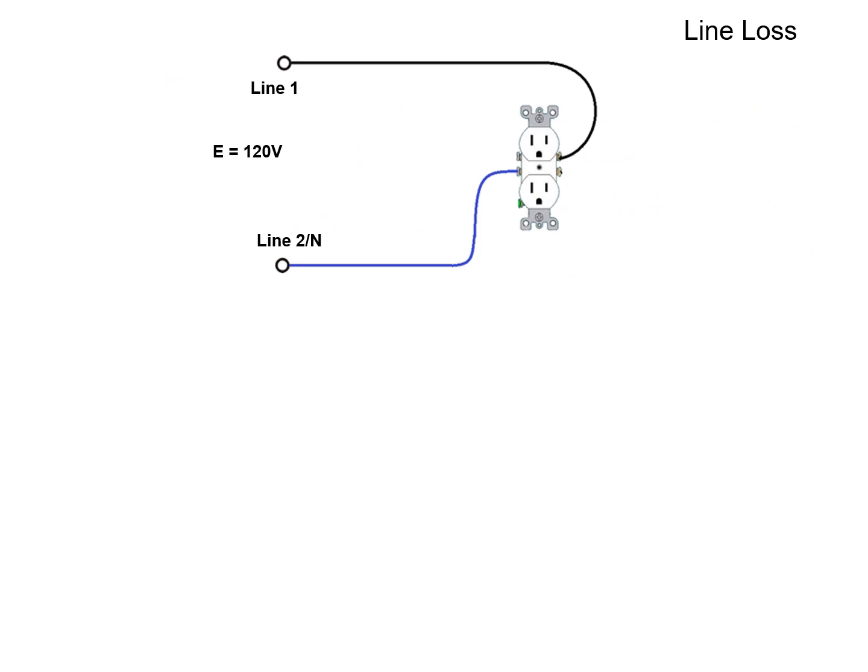Let's look at a more practical application. Here we have a standard North American 120 volt receptacle where it's fed by two wires, line one and line two N. The N would stand for neutral if it was a three-wire system, but in this case it's the return wire, so it's more appropriate to call it line two. All of my current or my feed comes in on line one, and then if I was drawing any current it would return back on line two or the blue wire.